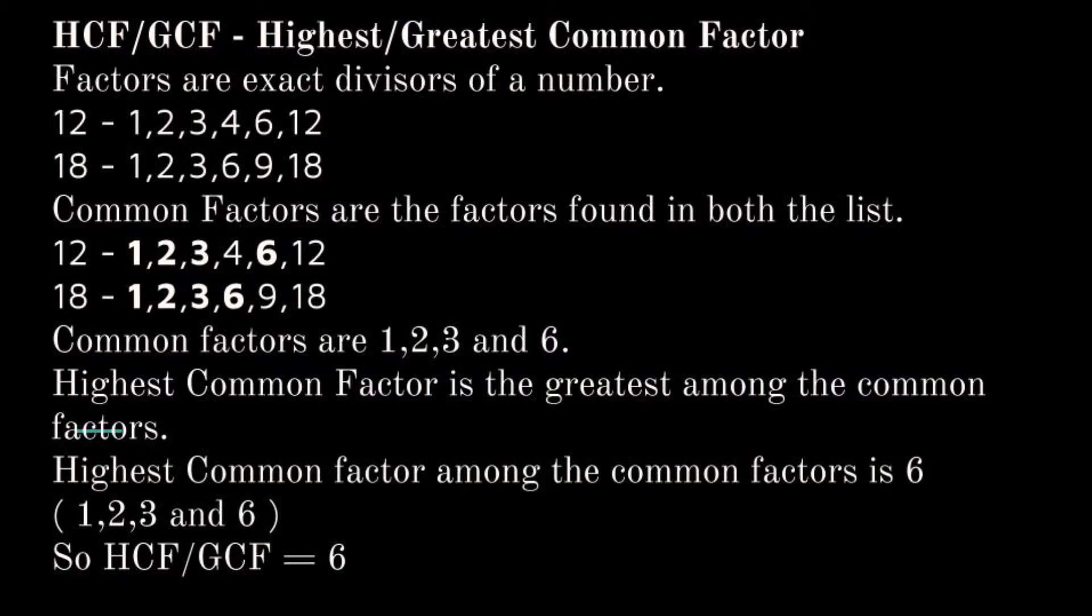The factors of 18 are 1, 2, 3, 6, 9, and 18. The common factors are the ones which are commonly found in both the lists, which are made bold here. That is 1, 2, 3, and 6 are the common factors.